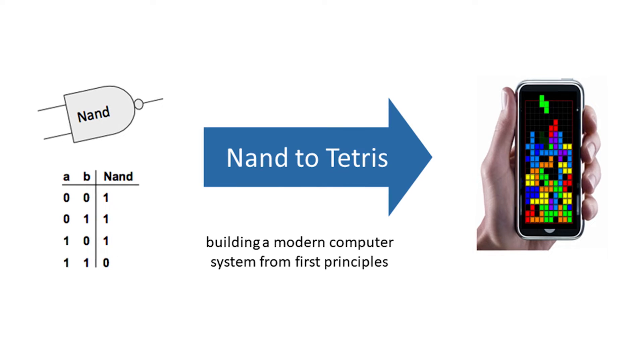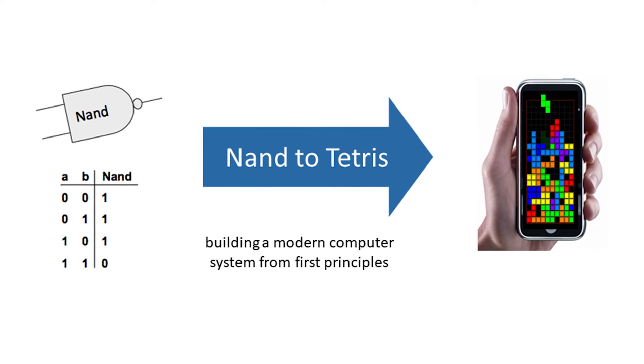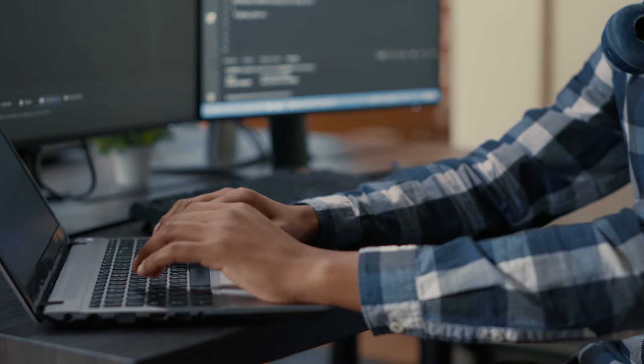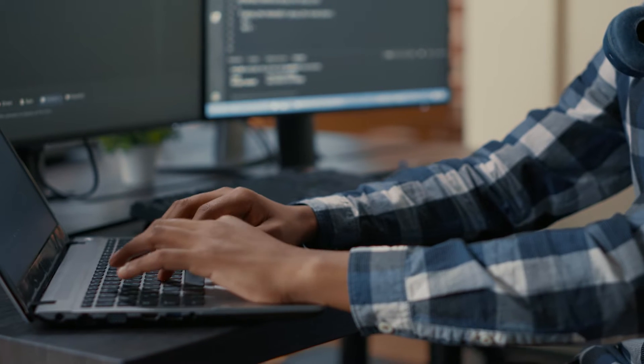NAND to Tetris is a new approach for teaching applied computer science. We start with NAND, which is the most elementary logic gate, and using a sequence of 12 guided projects we build a modern computer system — hardware and software — from first principles. The result is a general purpose computer system capable of running Tetris and any other program that comes to mind.